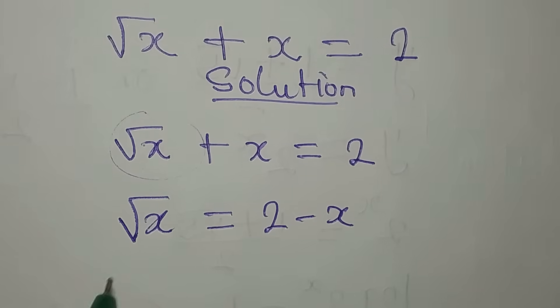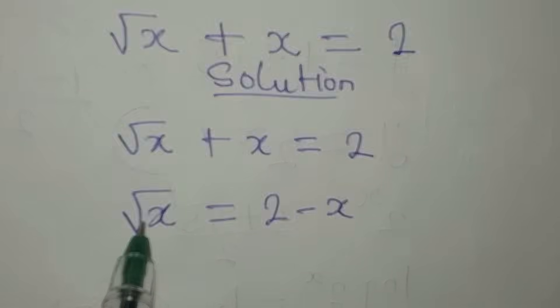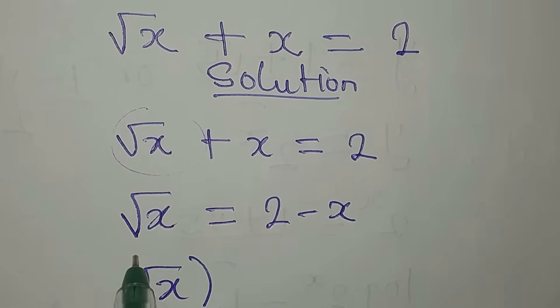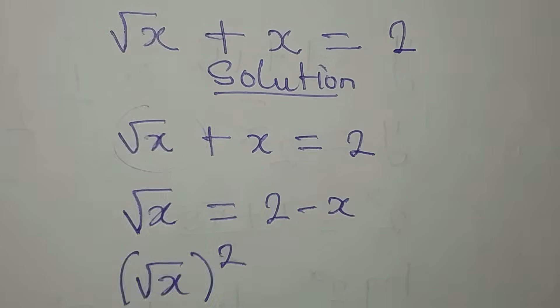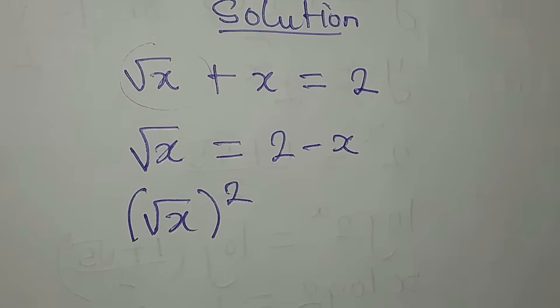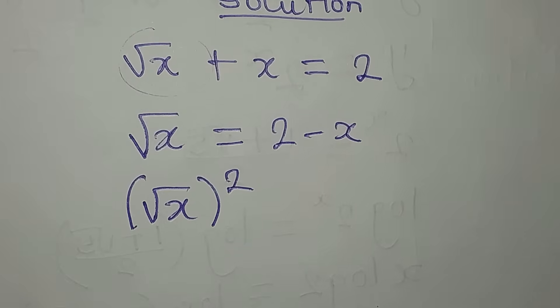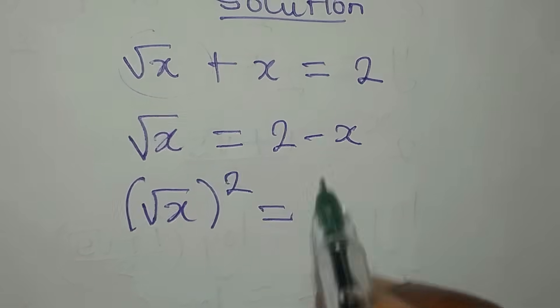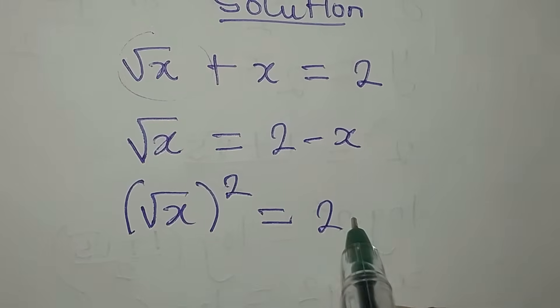Now the next target is how do I remove this root? To remove this, you will have to square it, because square and square root have a way of cancelling out themselves. From here we have 2 minus x.